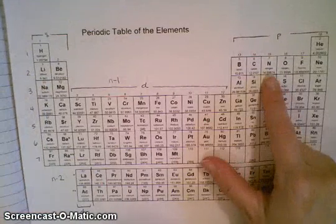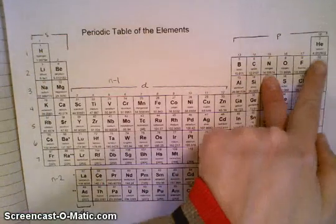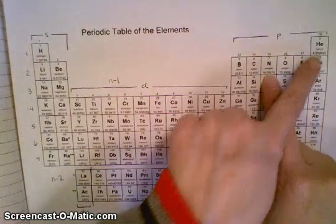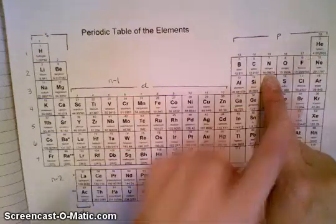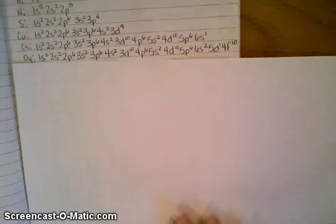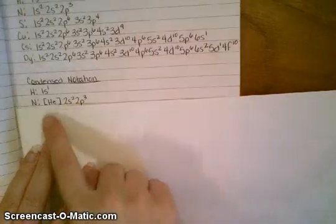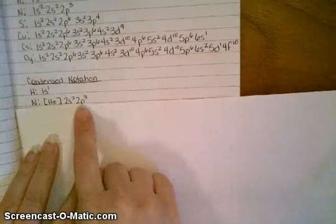However, if we look at nitrogen, we notice that the previous noble gas is helium, so you're actually going to replace the 1s2 with helium. So you'll start with helium in brackets, and when you do that, you have your brackets for helium, and then you copy down everything else thereafter.